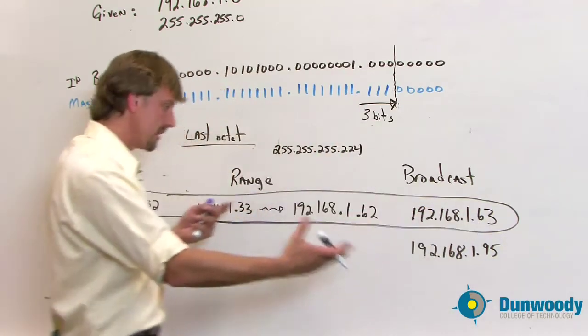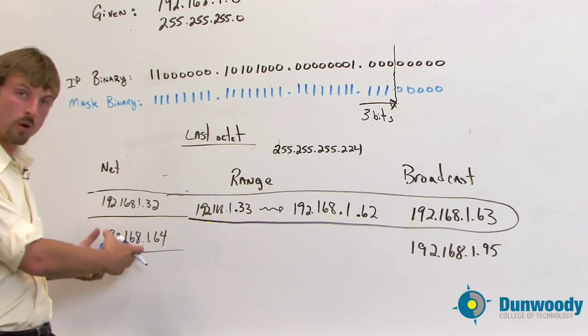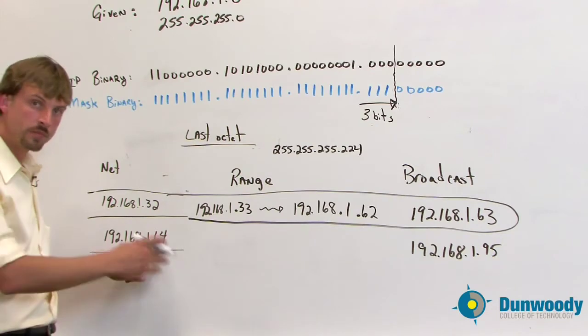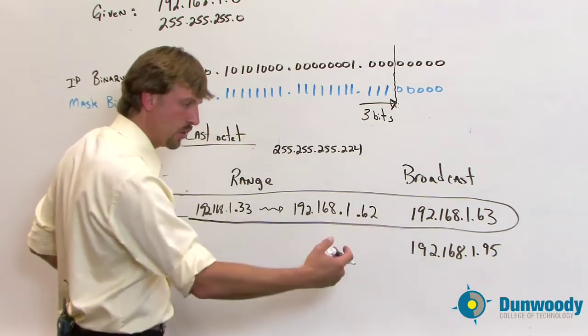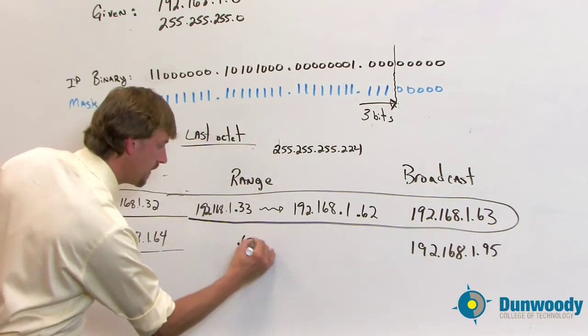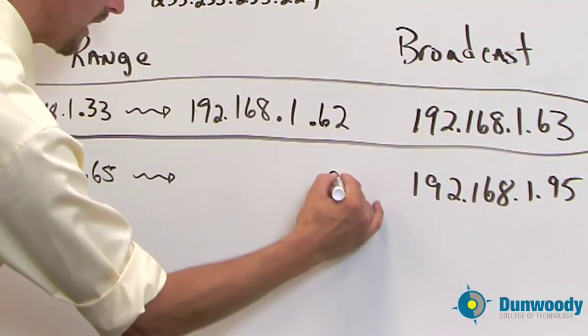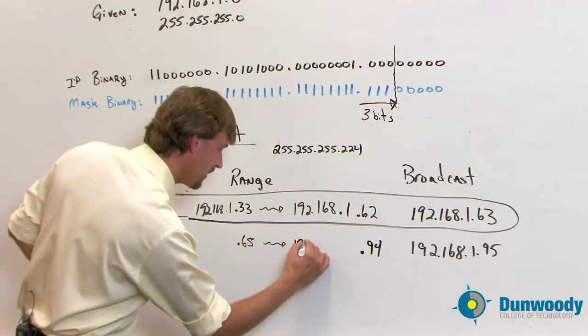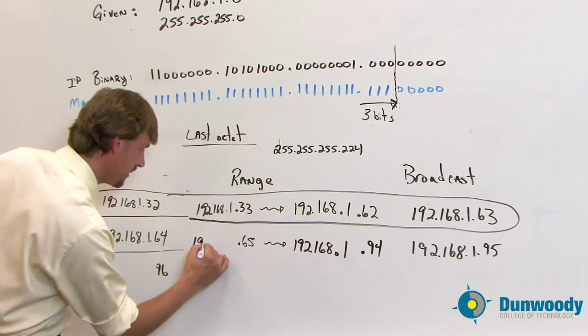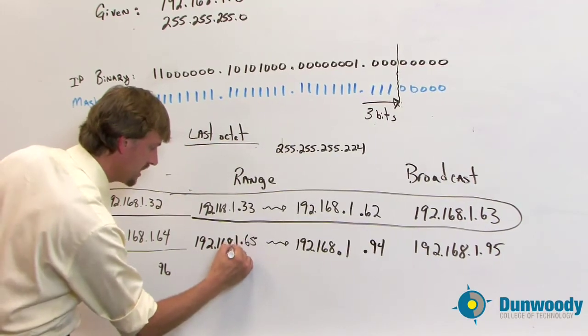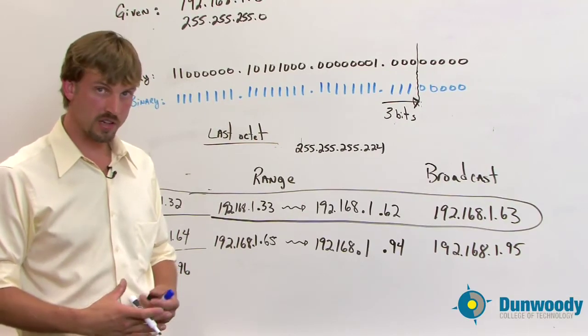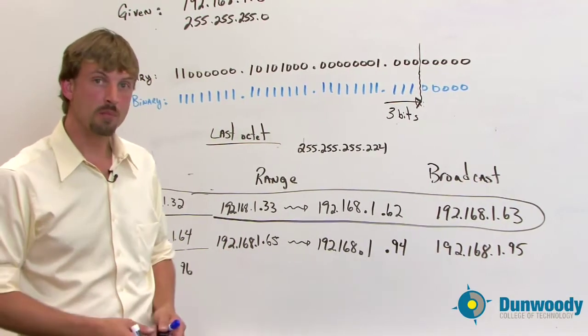And then from there it clicks into the next network, which is dot 64. And again, we can do the same process there. Take this one, add one to it, you take that one, subtract one from it, and that'll show you everything that's in between. So this would be 65 all the way through. This is going to be 94 here. So if we put all of the pieces into place here, we can see the first two logical networks that we've created in our subnetting process all the way through this part one, part two, and part three.